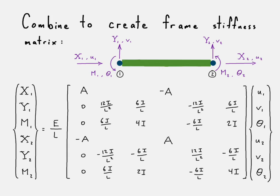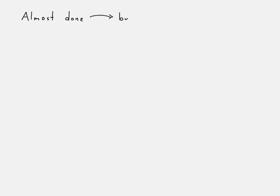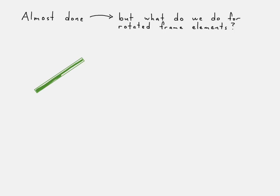Everything else is just zero. That's our frame stiffness matrix, except that we only have this in the case of an element that's purely horizontal. What happens if we need to orient this? We'll take a look at how we handle a rotated frame element.